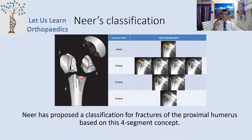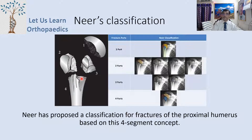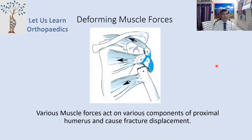Neer has proposed a classification for fractures of the proximal humerus based on this four-segment concept. Before that, let us see the various muscle forces acting on the components of the proximal humerus and causing fracture displacement.